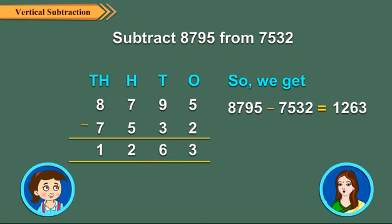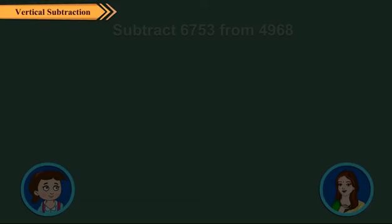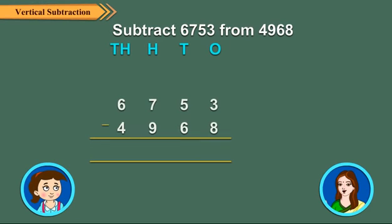Very good, Neha. Now, let us take an example in which you will see how we regroup thousands to hundreds. Let us find 6753 minus 4968.